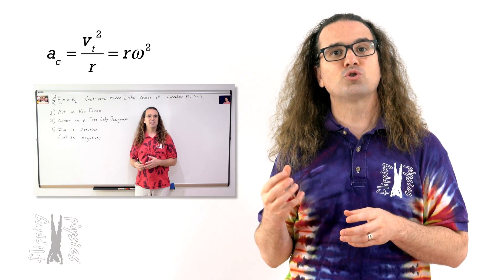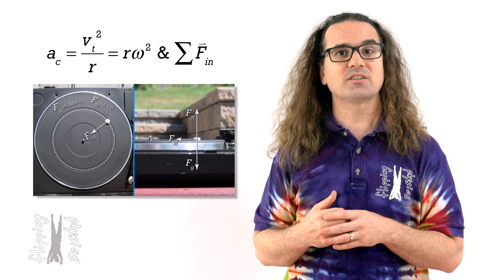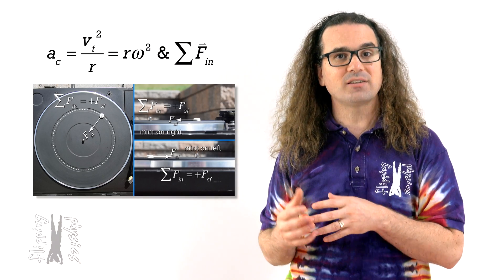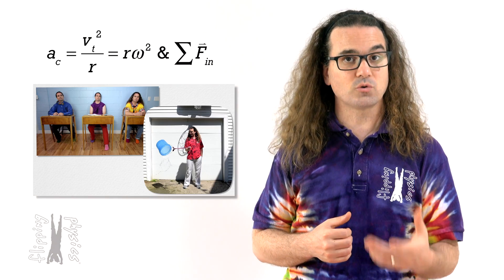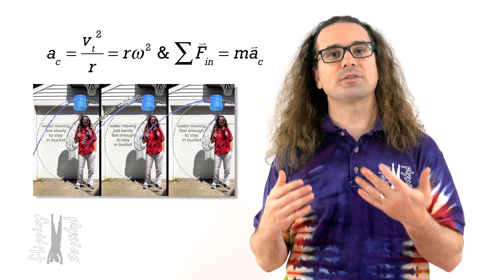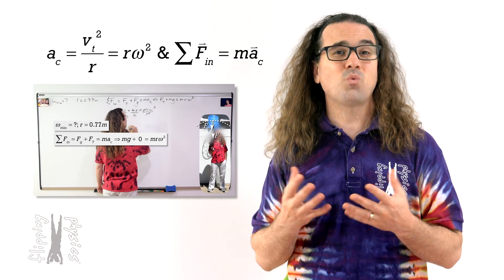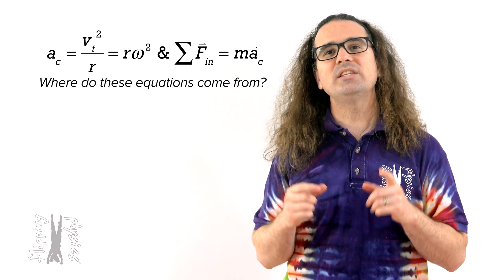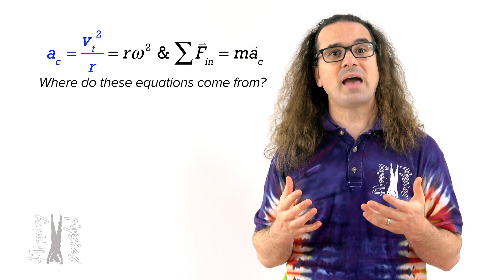We have also learned about the centripetal force, or the net force acting in the inward direction on an object when it is moving along a circular path. According to Newton's second law, the centripetal force equals mass times the centripetal acceleration. What we have not learned is where these equations come from. So today, we derive the equation for centripetal acceleration.